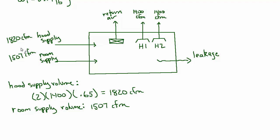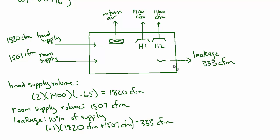The leakage they said is 10% of what's supplied, so we can calculate that. That's going to be 0.1 times 1820 plus the 1507, and that works out to 333 CFM.